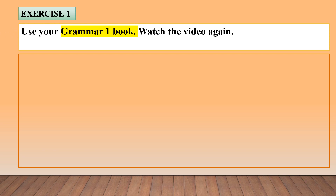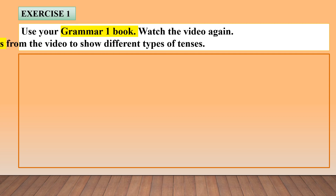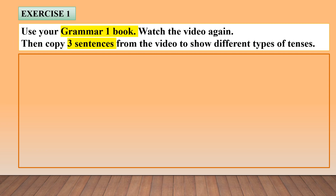For exercise one, you're going to use your grammar book one. Can you please take out your grammar book one now? And you're going to watch the video again. So listen to my explanation first before you watch the video again. Afterwards when you watch the video, I want you to copy three sentences from the video to show different types of tenses.